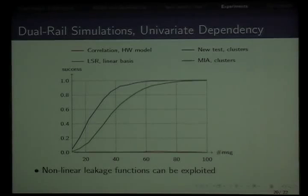Now we move to simulations of dual-rail implementation, a very complicated leakage function which is highly non-linear. We see that usual distinguishers—correlation and least-square regression—don't work at all because they exploit linear dependencies which in this case don't exist. Generic distinguishers work as long as the leakage model is relevant. We can exploit this kind of non-linear leakages using generic distinguishers. This is one case where we need generic distinguishers rather than specific ones.